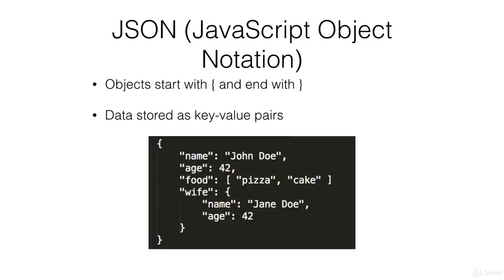Documents stored in MongoDB are in the JSON format. If you're not familiar with what JSON is, that's fine, because it's very easy to understand and it's also very human-readable. JSON stands for JavaScript Object Notation. Objects in JSON start and end with curly braces, and data is stored as key-value pairs. Here's an example of an object. You can store strings, like John Doe, or you can store numbers, like 42, without quotation marks. And you can also store arrays — for example, this array of strings right here. You can also store objects within objects.